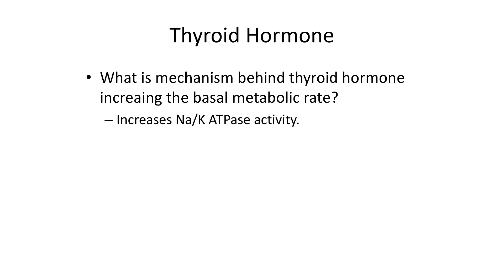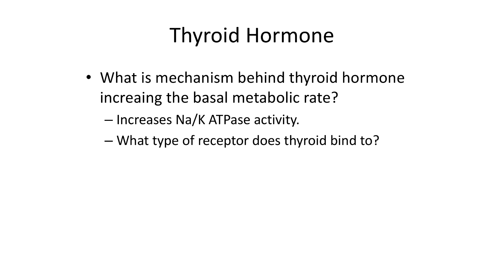The mechanism behind thyroid hormone increasing the basal metabolic rate is that thyroid hormone increases sodium-potassium ATPase activity. Thyroid hormone can also be abused exogenously by people trying to lose weight. Thyroid hormone binds to an intracellular receptor — that's important because it is steroid-like.